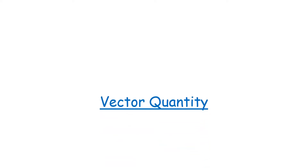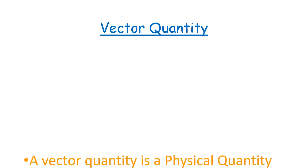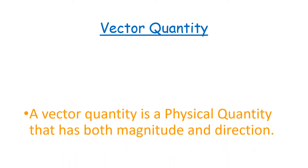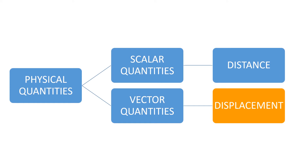By definition, a vector quantity is a physical quantity that offers both magnitude and direction. In the simple illustration I have just given you, distance is just a scalar quantity — it only has magnitude. However, when the distance is given direction, in this case when the 50 kilometers are now being described as 50 kilometers northeast, then it becomes displacement. Distance is a scalar quantity. Displacement is a vector quantity.